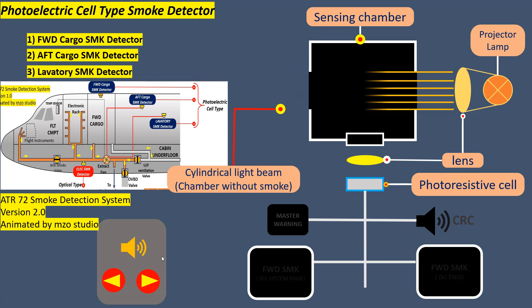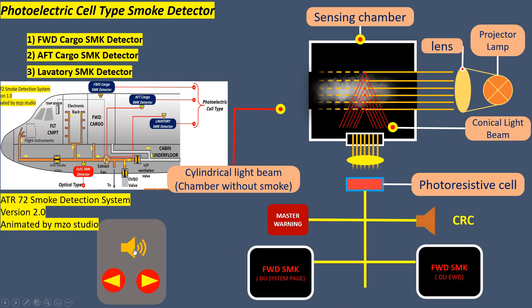A photo resistive cell is fitted on the chamber along an axis perpendicular to the light beam. When the air is free of smoke, no light reaches the photo resistive cell.